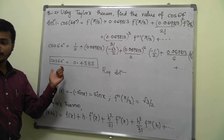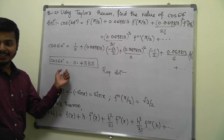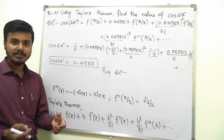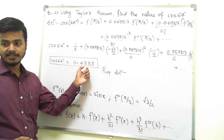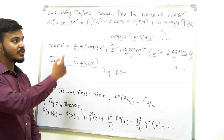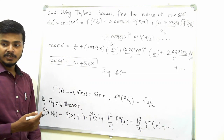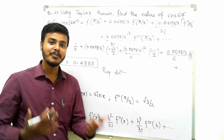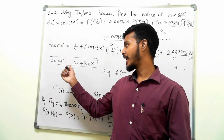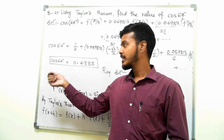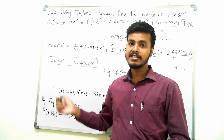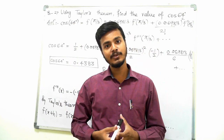If you want to check whether your answer is correct, take a calculator, put cos(64°), and see the answer. If you are getting this same value, then whatever you have done with the Taylor series is correct. So you can cross-check your answer with a calculator.